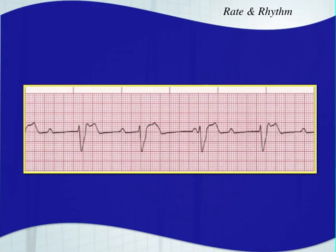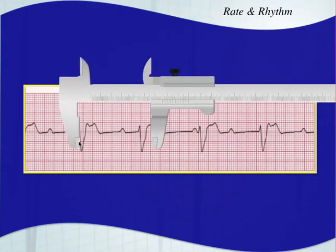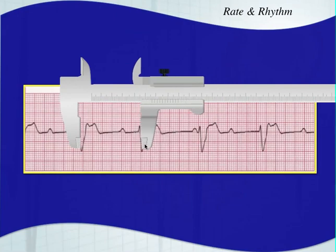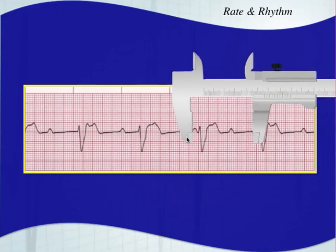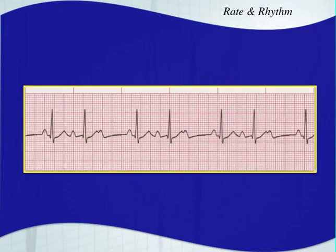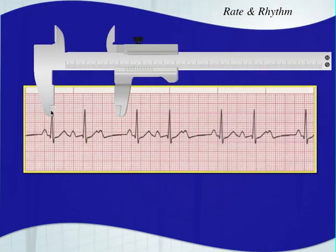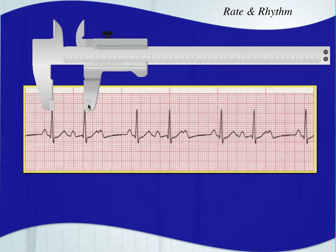This one also obviously has a heart rate of about 40 — four beats on the six-second strip — and it is also regular. So we're reviewing rate and rhythm. We already discussed these concepts.